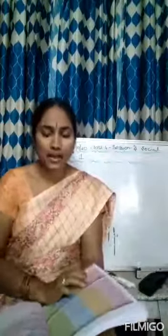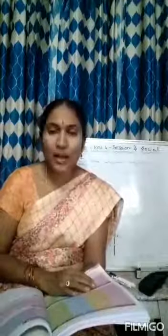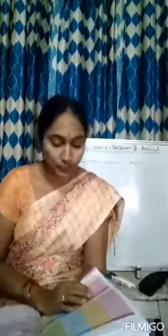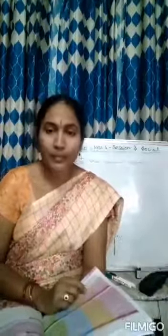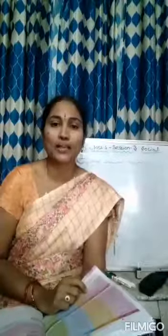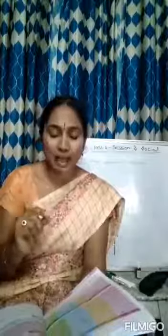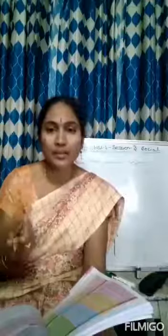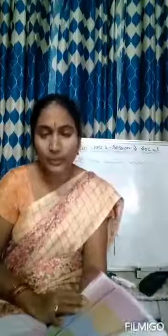Tripura — Agartala. Uttarakhand — Dehradun. Uttar Pradesh — Lucknow. West Bengal — Kolkata. So I have read all 28 states and you have to read them. Now they have given the Union Territories.